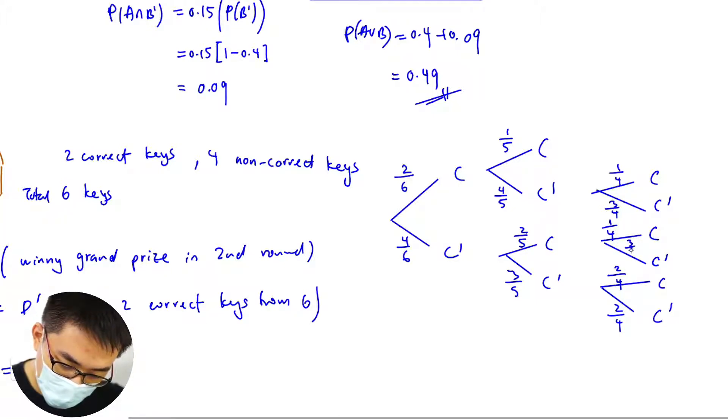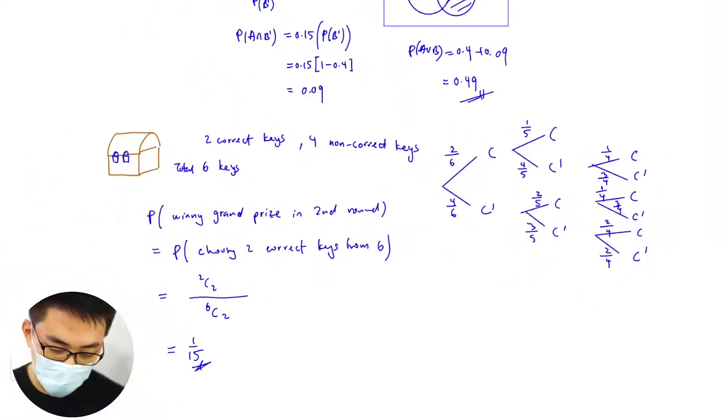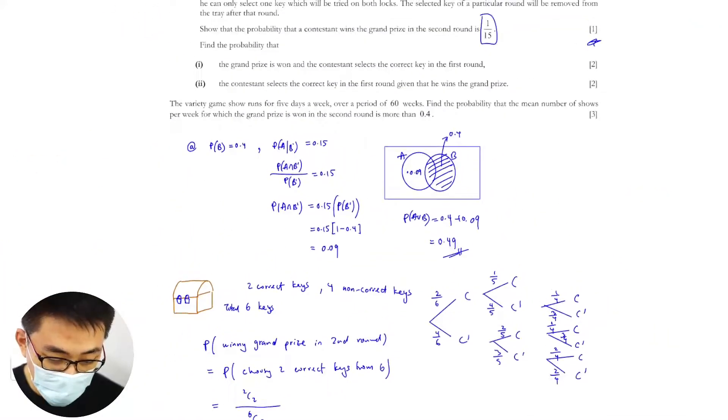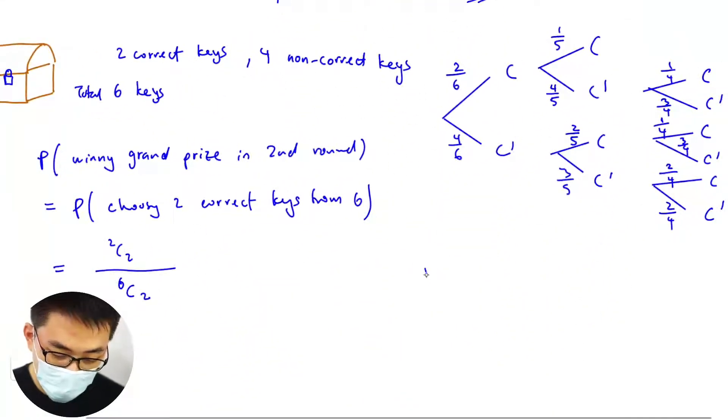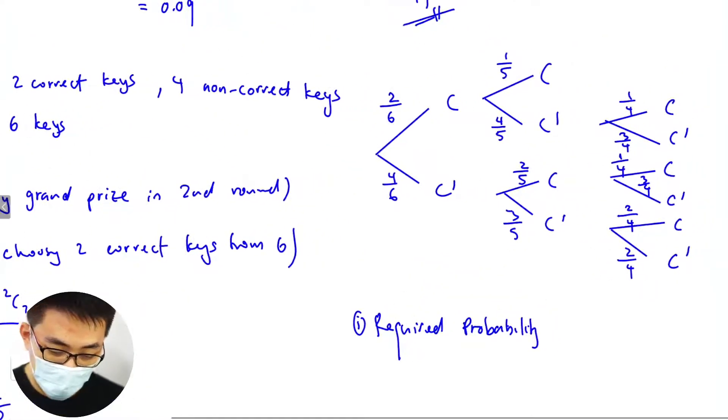So the grand price is won and the contestant selects the correct key in the first round. The required probability. First round he called correct, he won. So this is one and this is one, only these two, because these are the only two strands which C is won in the first, the correct key in the first round.